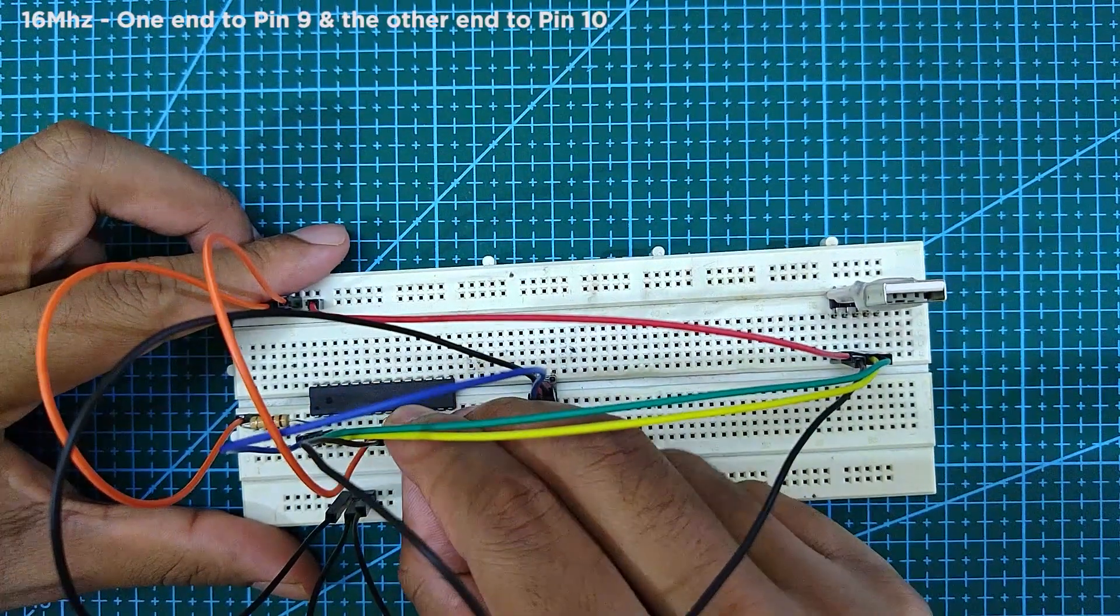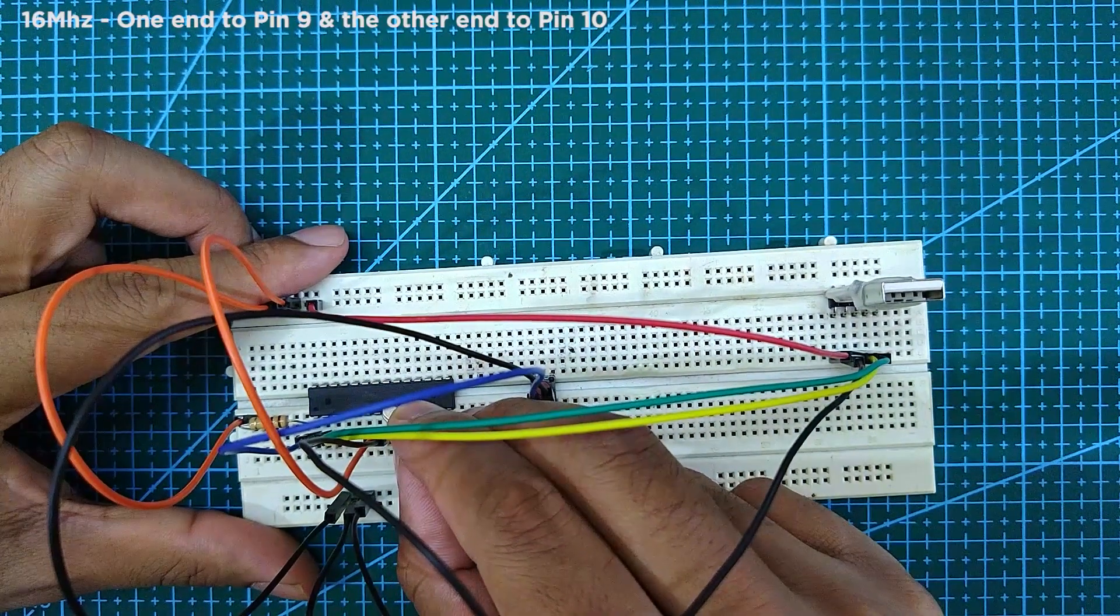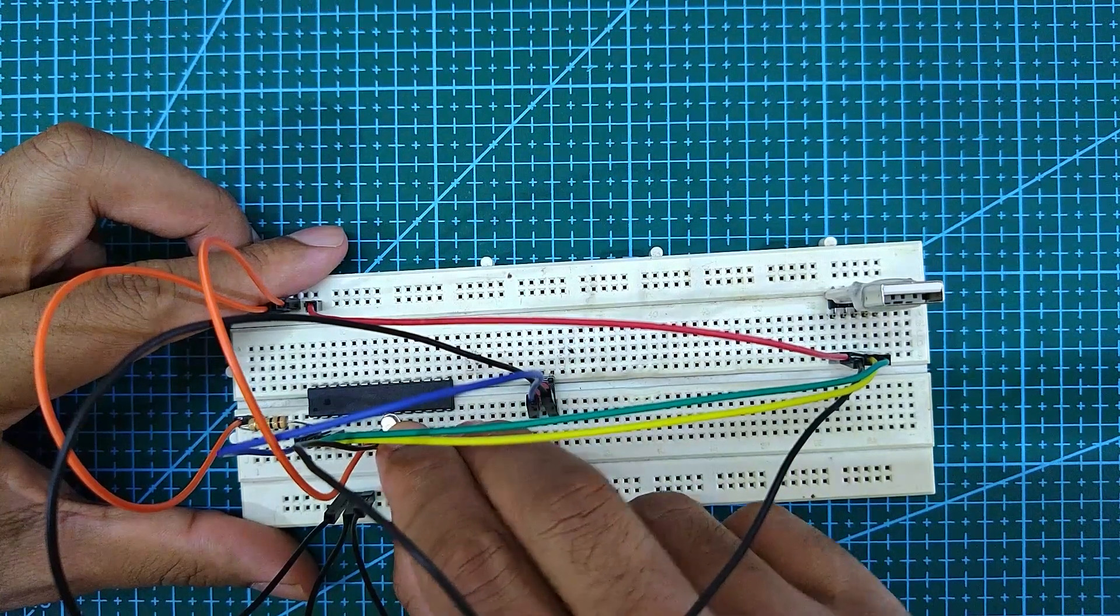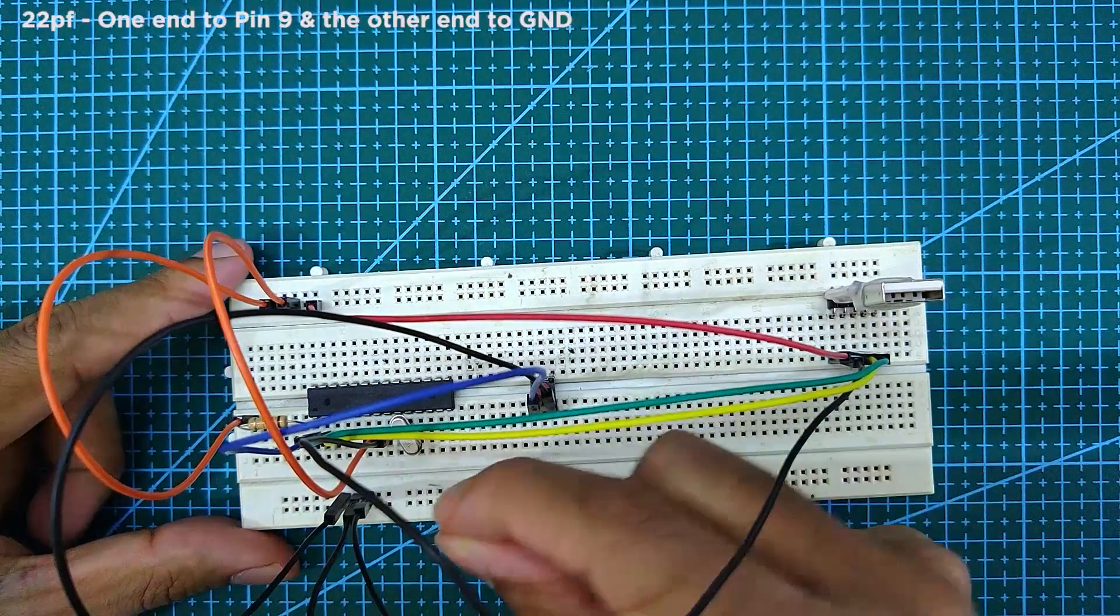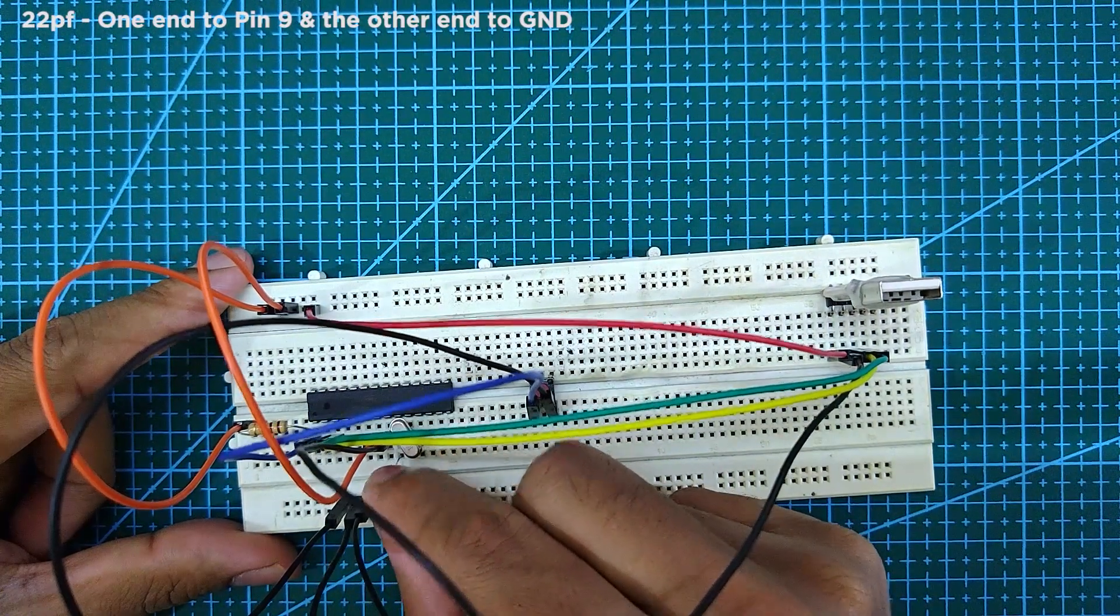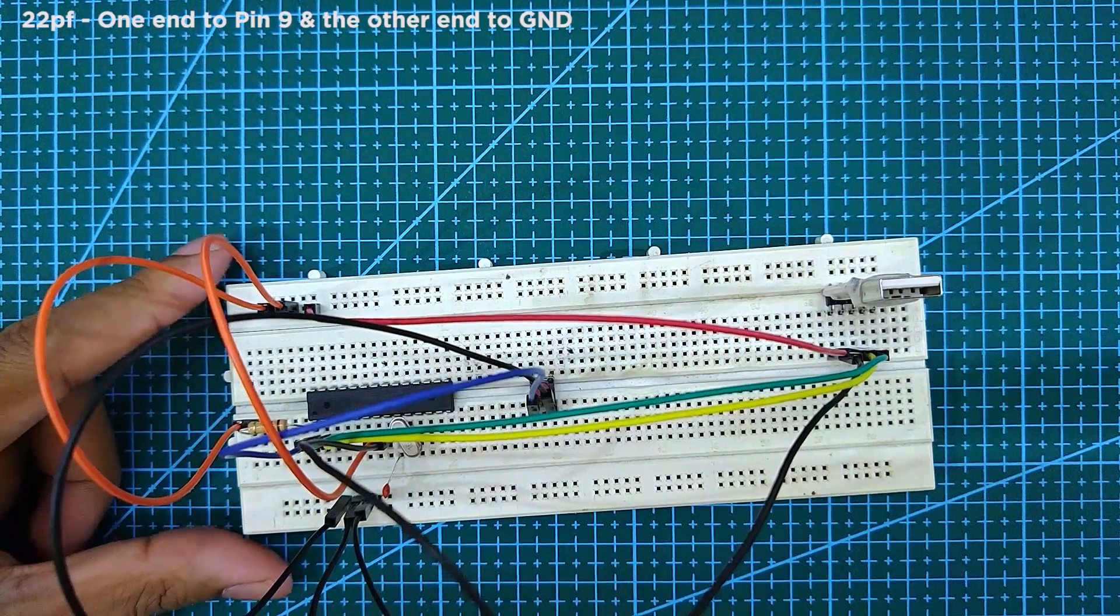Next, connect one end of the 16MHz crystal to pin 9 and the other end to pin 10. Then connect one end of a 22pF capacitor to pin 10 and the other end to ground.